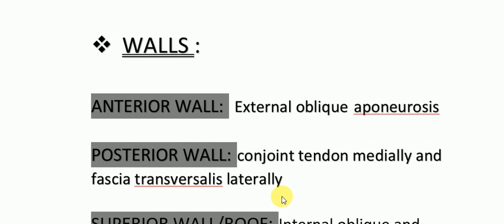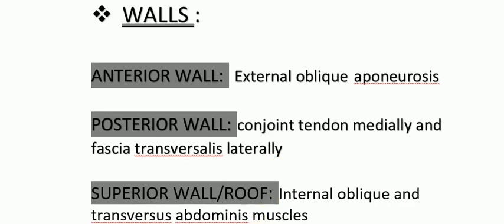Now let us discuss the walls of the inguinal canal. The anterior wall is formed by the external oblique aponeurosis. The posterior wall is formed by the conjoined tendon medially and fascia transversalis laterally.